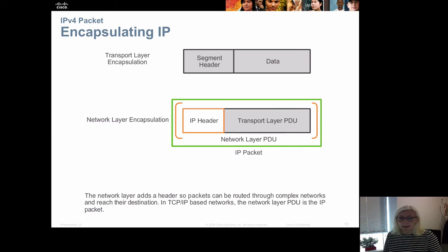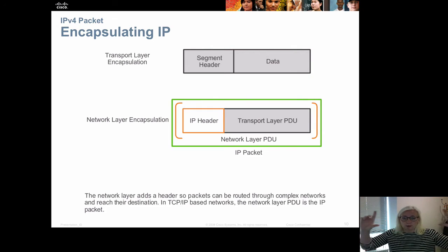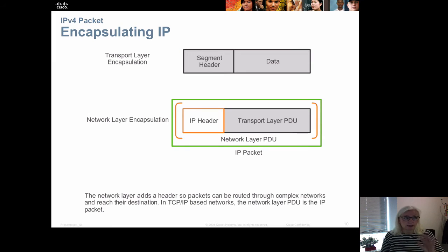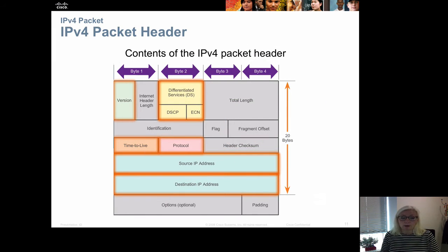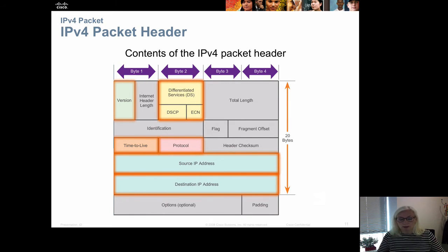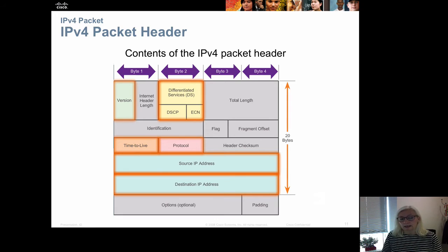We encapsulate the TCP layer package coming from the transport layer, and it is sent down to the network layer where we add the IP header. The IPv4 header is 20 bytes long — that is the overhead — and then we have the payload which is the data itself.